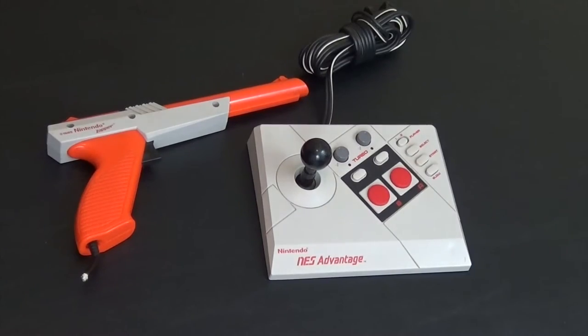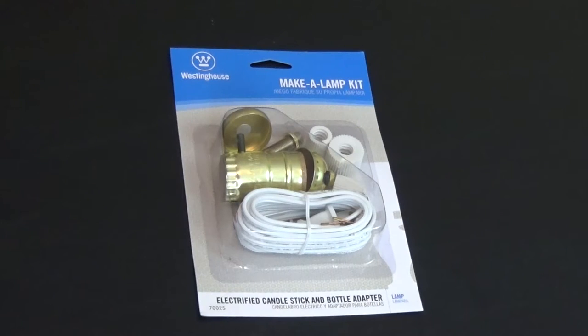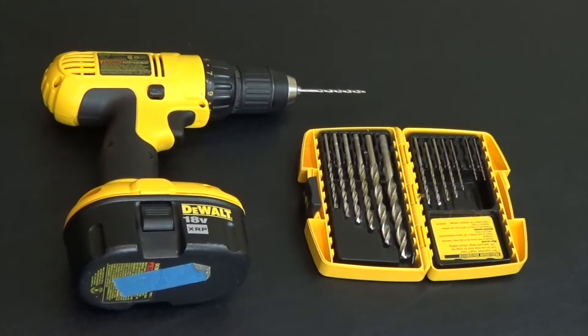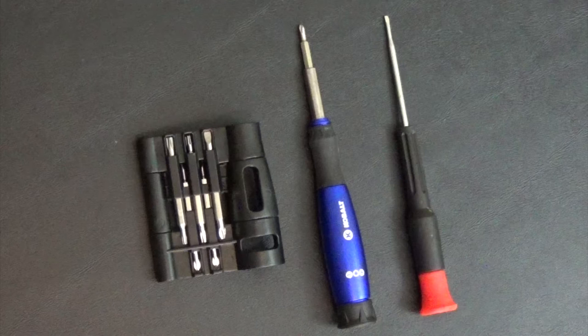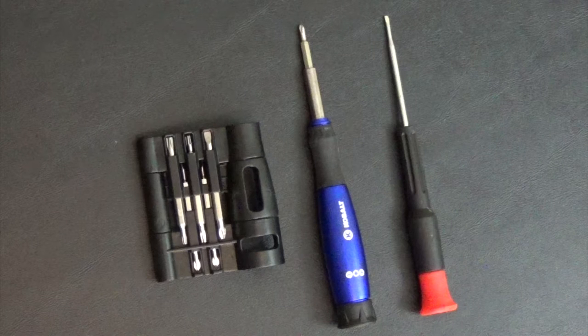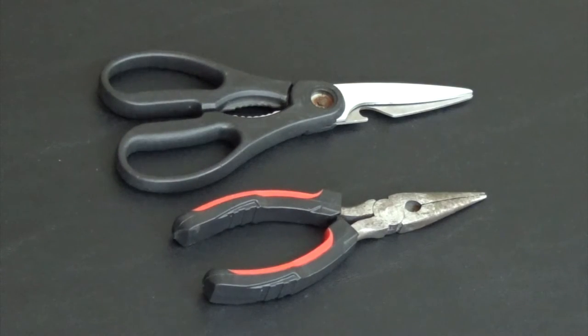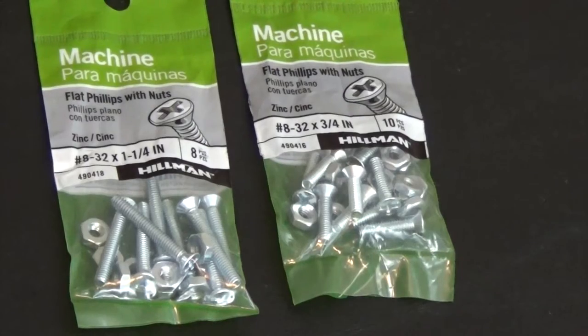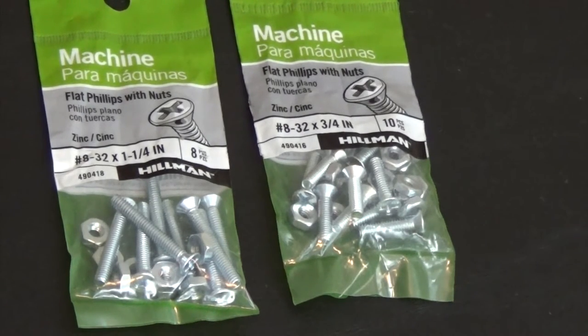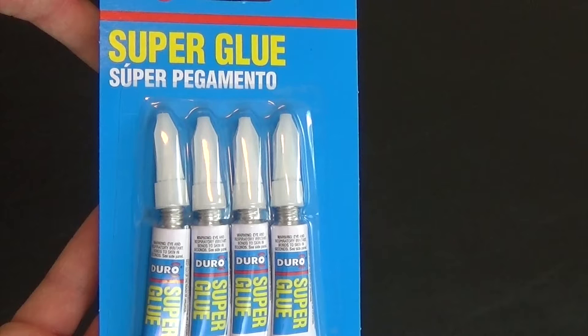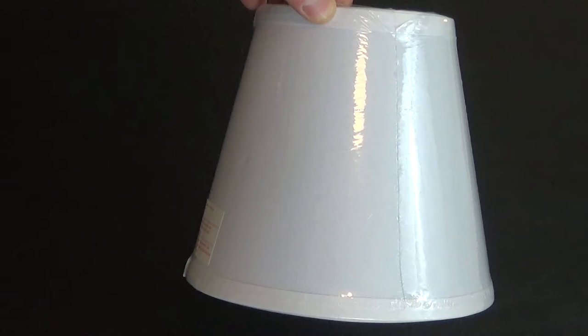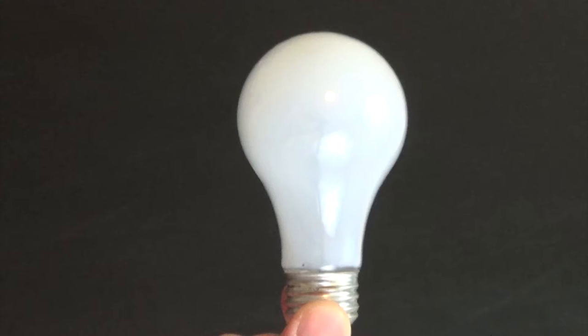To begin this project you'll obviously need a zapper and an NES Advantage, broken preferably. A light kit, a drill with various sized bits, two small screwdrivers, some scissors and pliers, various sized screws, one being one and one-fourth of an inch and the other being three-fourths of an inch, some type of glue, a lampshade, and a light bulb.